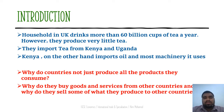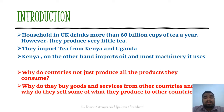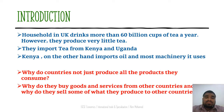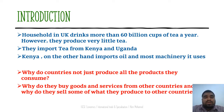Households in the UK drink more than 60 billion cups of tea a year. However, they produce very little tea — they import tea from Kenya and Uganda. Kenya, on the other hand, imports oil and most machinery it uses. So why do countries not just produce all the things that they consume? Because of scarcity — they don't have enough resources. That is why they buy goods and services from other countries, because other countries are specialized in those goods.